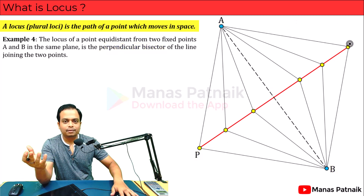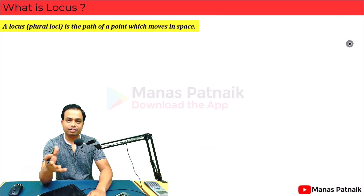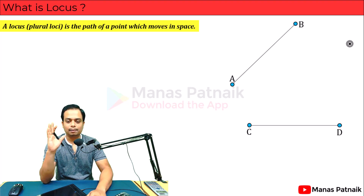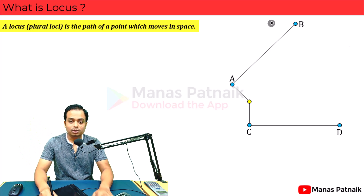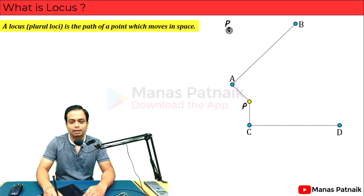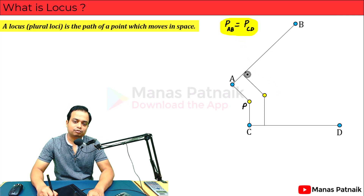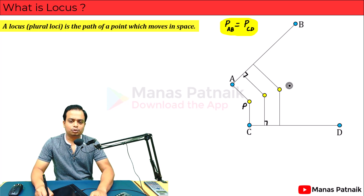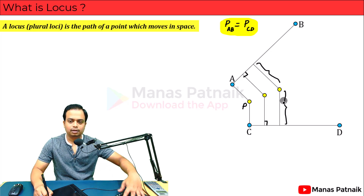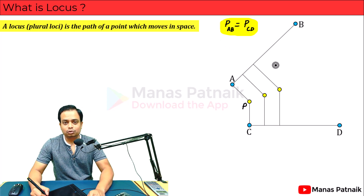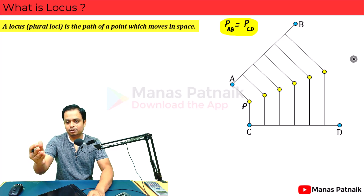This is the last example — Example 5. We have two non-parallel lines. A point P is placed, and the rule is that P's distance from line AB is equal to P's distance from line CD. It always maintains this rule. It shifts to a new position — again the distance from AB equals the distance from CD. The distances are perpendicular. New position, same rule: distance from AB equals distance from CD. If the point keeps following this rule, we get a line when all positions are joined in sequence.